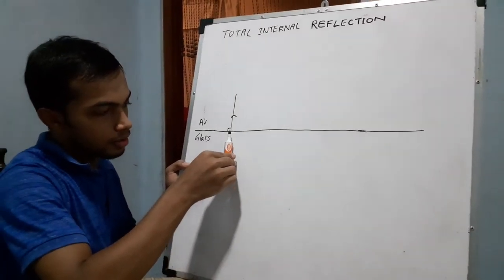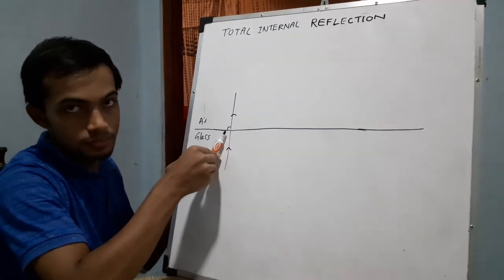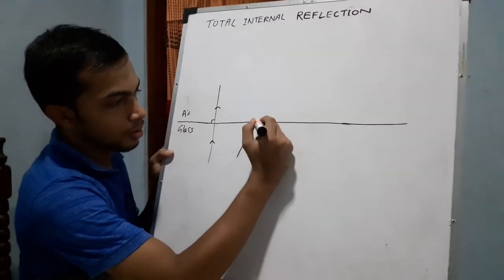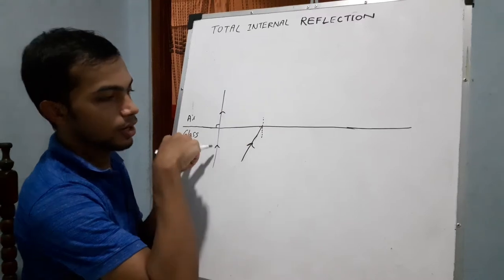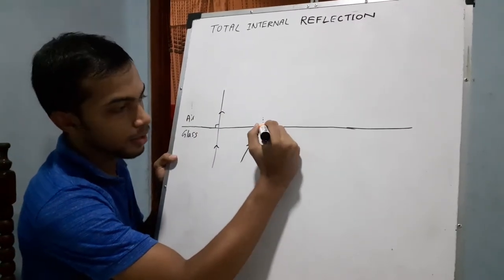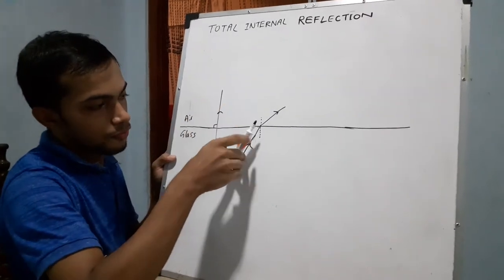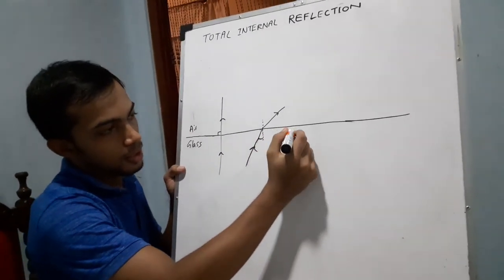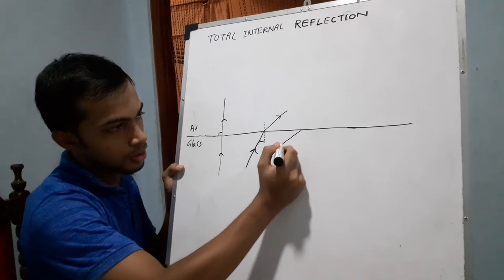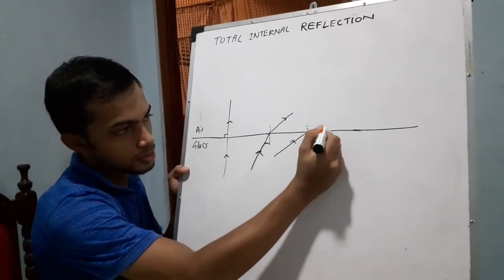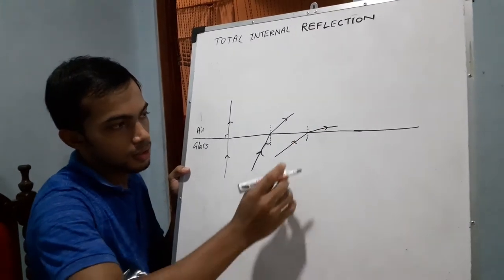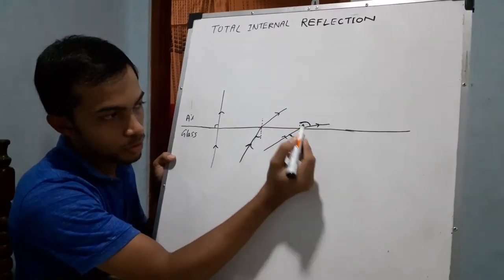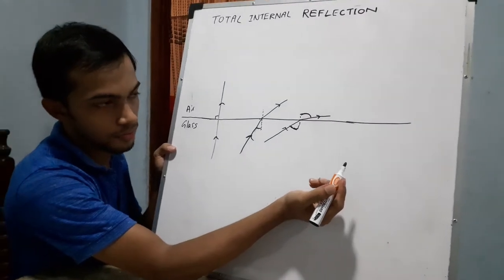But if you form an angle of incidence like this, from glass to air, it will be refracted away. If you increase this incident angle that forms with the normal, you can see this light ray bends towards this interface. When you increase the angle of incidence, the angle of refraction also increases according to the index of refraction or the refractive index.